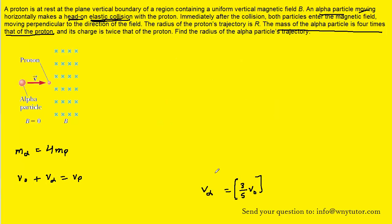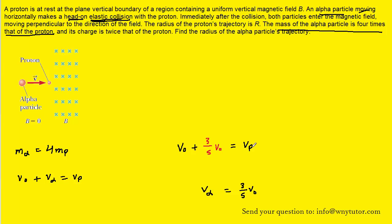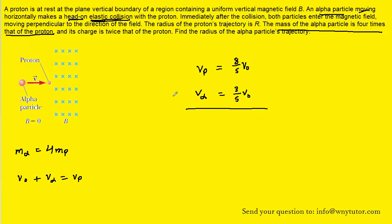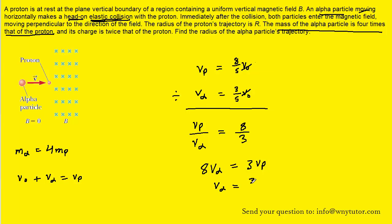Taking that result and substituting it back into the earlier velocity equation, the velocity of the proton equals V_naught plus three-fifths V_naught, which is eight-fifths V_naught. So we now have the proton's final velocity as eight-fifths V_naught and the alpha particle's final velocity as three-fifths V_naught, both in terms of the alpha particle's initial velocity. Dividing these two equations, the V_naughts cancel, and eight-fifths divided by three-fifths gives eight-thirds. Cross-multiplying, eight times V_alpha equals three times V_proton, so the final velocity of the alpha particle is three-eighths the final velocity of the proton.